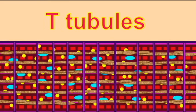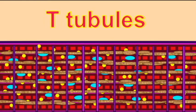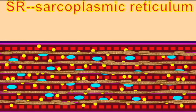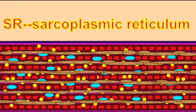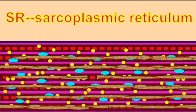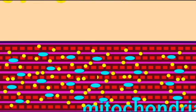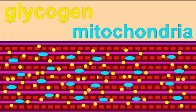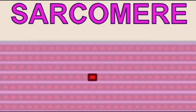There are glycogen granules for energy, and there are mitochondria, which can produce ATP by breaking down this stored energy. Now within the myofibrils are small units known as sarcomeres. The sarcomeres are the functional units of the muscle cell.